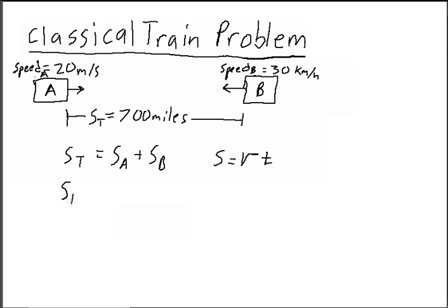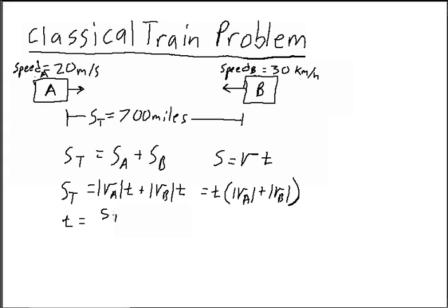So we can rewrite this where S total is equal to the magnitude of the velocity of A times the time before they meet plus the magnitude of velocity B times the time before they meet. And then we can pull out the time and make this equal to the magnitude of velocity A plus the magnitude of velocity B. So then we can solve for the time is equal to the total distance divided by the magnitude of velocity A plus the magnitude of velocity B.